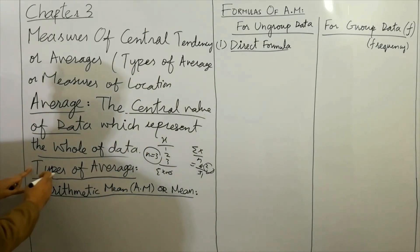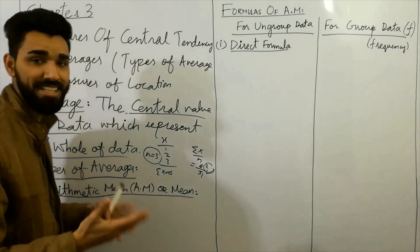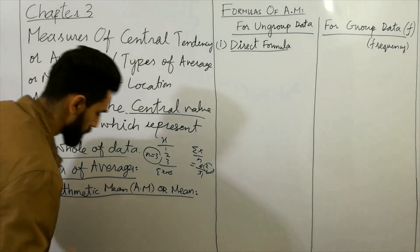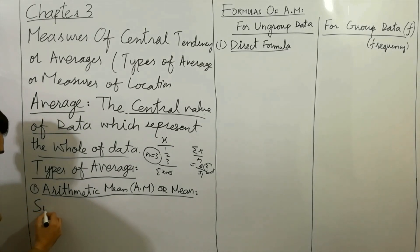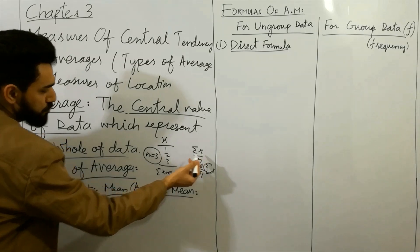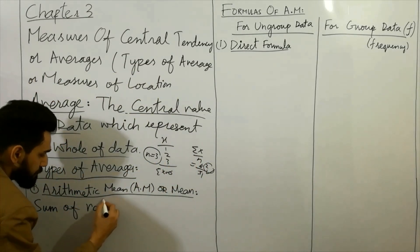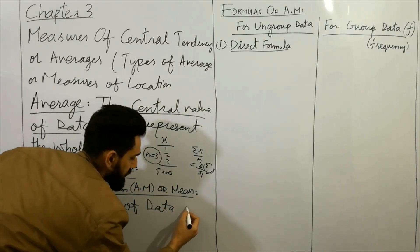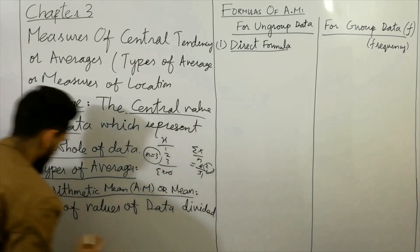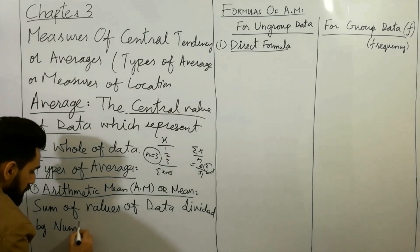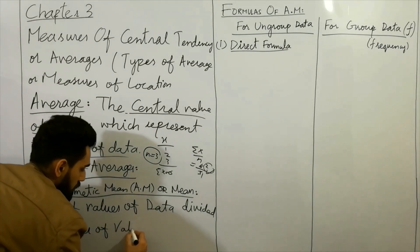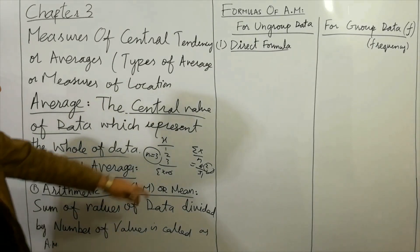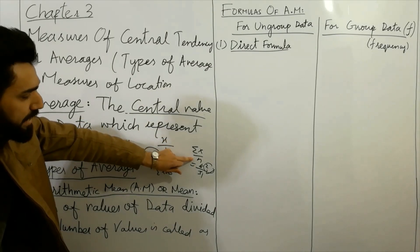Next, we look at the types of averages — arithmetic mean, median, mode, etc. First, I'll discuss the arithmetic mean. The definition is: the sum of all values of data divided by the number of values is called the arithmetic mean.